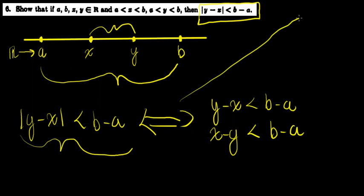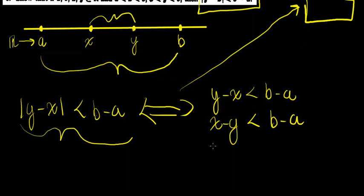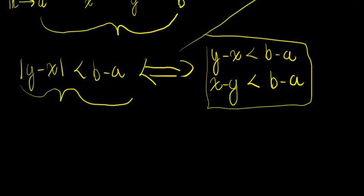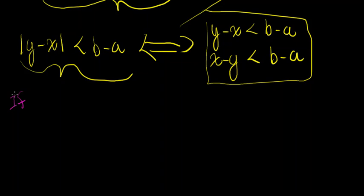I encourage you not to take this statement for granted. I proved this in another video that I'll link in the top right corner. But for the purposes of this video, take my word for it that this is true. So, the absolute value of Y minus X being strictly less than B minus A is the same thing as saying this, and let's rewrite our problem in this more accessible form.